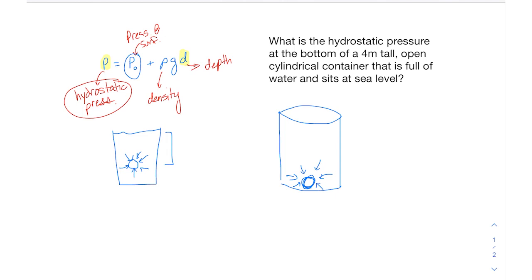So we know we have our equation that we see over to the left, and to solve for hydrostatic pressure, p, that's what we're solving for. We're going to have to have values for everything else.